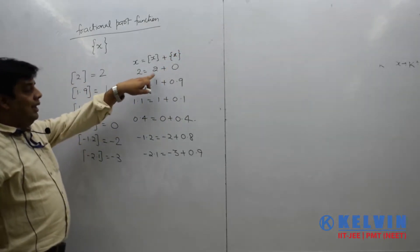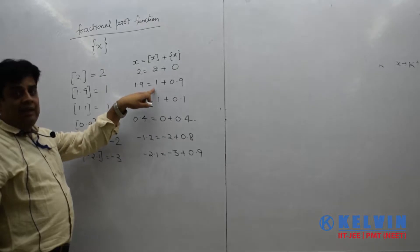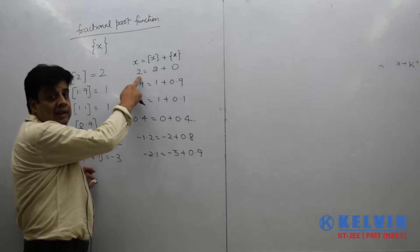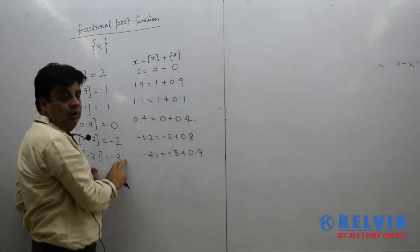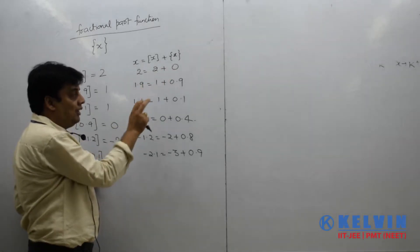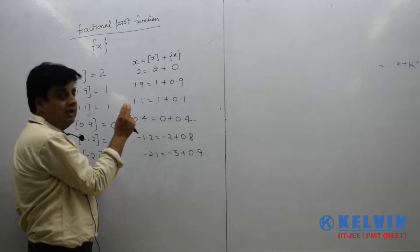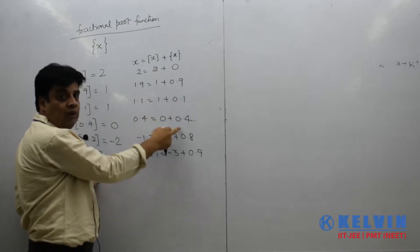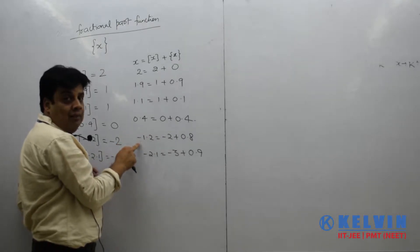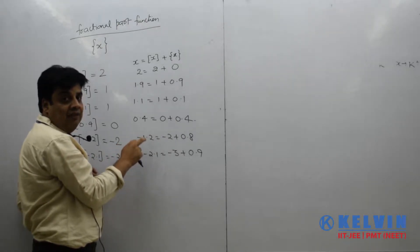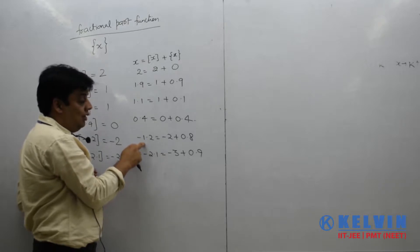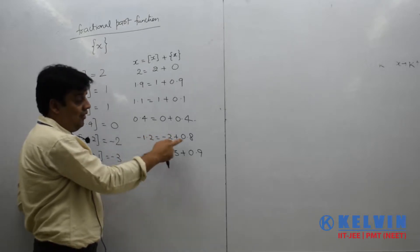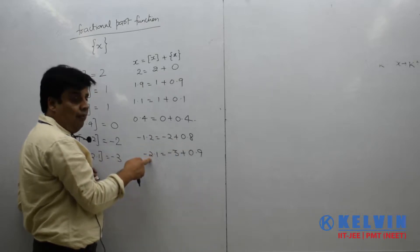So 2's greatest integer is 2, and 1.9's greatest integer is 1 only. These remaining values are the fractional parts. You can see that for negative numbers like minus 1.2 and minus 2.1, these are negative numbers.